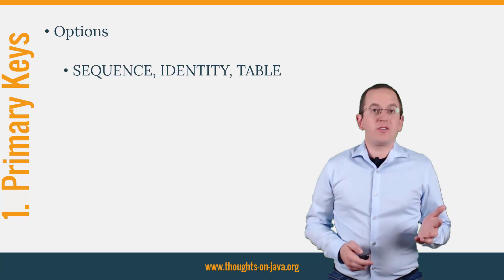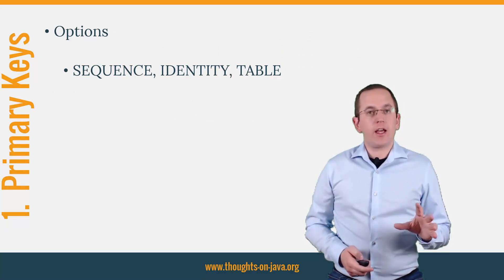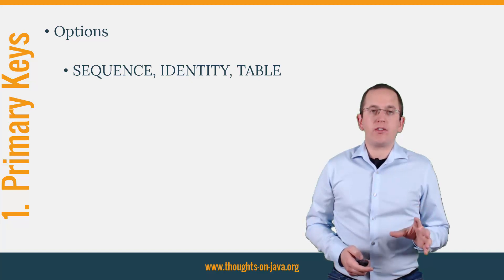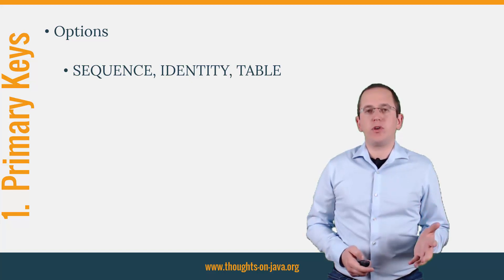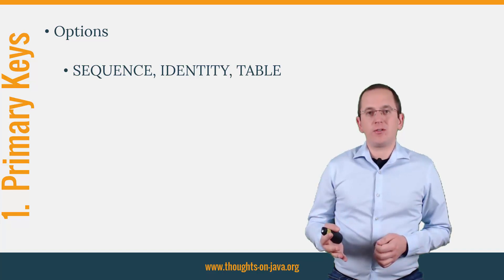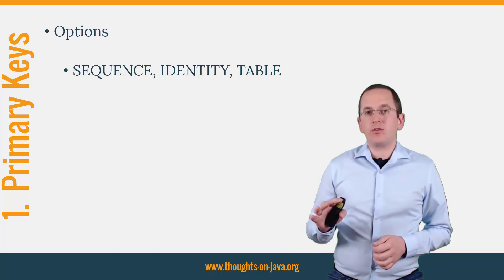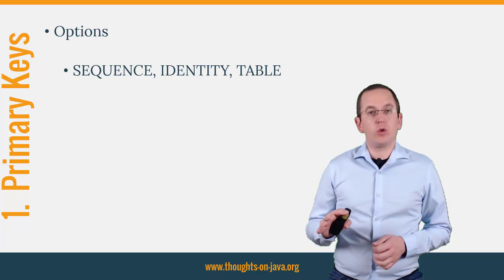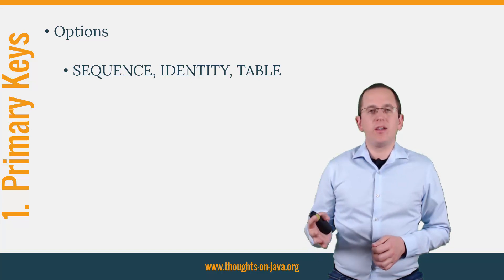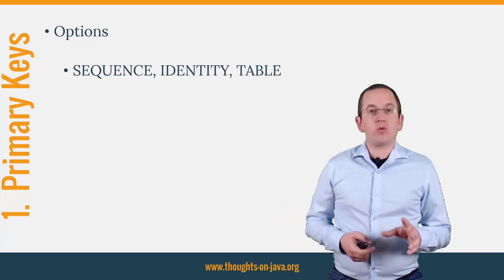1. Generate primary keys. The efficient handling and creation of primary keys are a basic but one of the most important parts of an application. The GeneratedValue annotation of the JPA specification allows you to define the strategy you want to use to create unique primary key values. You can choose between sequence, identity, table, and auto.